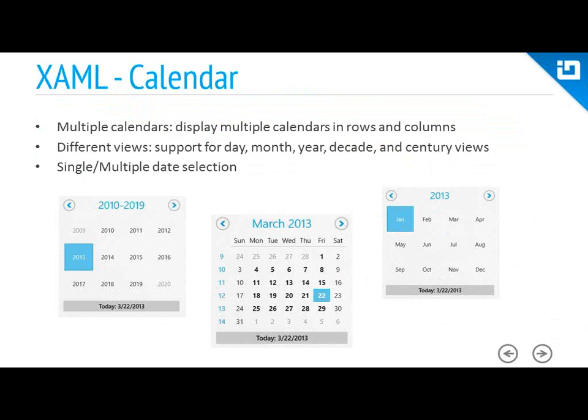A calendar control is a must-have for any line-of-business application. The XAM calendar is not just a simple calendar — it's a feature-rich calendar that allows you to display multiple calendars in rows and columns. It supports different views for day, month, year, decade, and even century views. It also supports single-date selection as well as multiple-date selection, and there are APIs to allow you to control what dates are enabled or disabled and mark holidays.